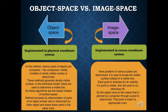In the object space method, it will be determined which surface is visible, which is invisible, and which is hardly visible. This method generally decides visible surfaces in the wireframe model and is used to determine visible lines. So the algorithms are line-based instead of surface-based. Object space is more toward detecting visible lines, not surfaces.